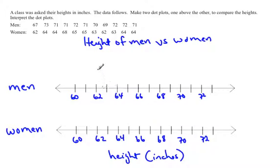Now, to create a dot plot, all you do is go along each number and find out where it belongs on the number line. So the first number for men is 67. 67 is here, so right above the mark for 67, we're going to just put a little dot.